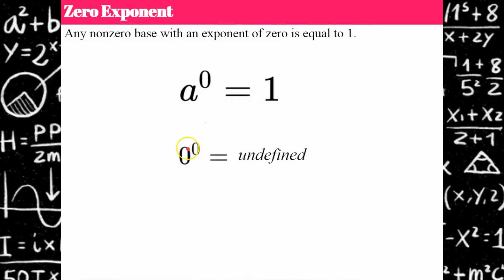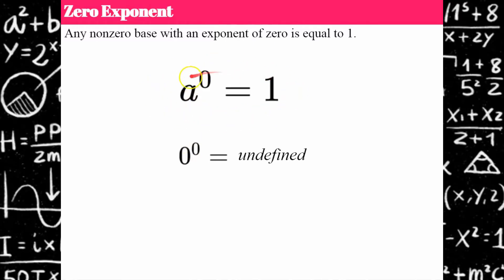If you have a base of zero and an exponent of zero, this is undefined. You can't have anything with a base of zero and multiply it by itself zero times. Please see my video on the explanation of this — I'll put a link in here for that.